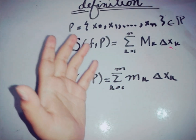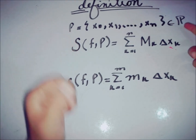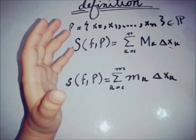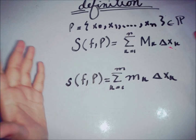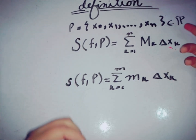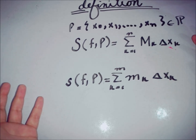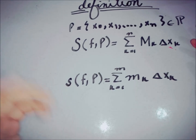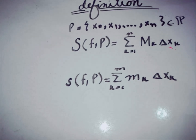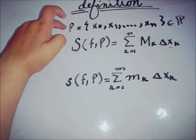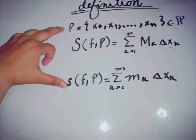But if we calculate the upper Riemann sum for every possible partition P from the set of all partitions, and similarly for the lower sum, we get a set of values for the Riemann upper sum and a set of values for the Riemann lower sum. From these sets of values we can find the supremum and infimum, and use them to define the Riemann lower and upper integrals.